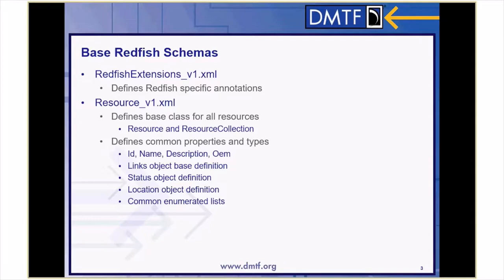The file Resource defines the common base class for all resources, which can either be resource or resource collection. It also defines the common properties found on all resources, as well as common type definitions. You'll find the properties ID, name, description, and OEM defined here, the definitions of the links, status, and location objects, and some common sets of enumerated lists.